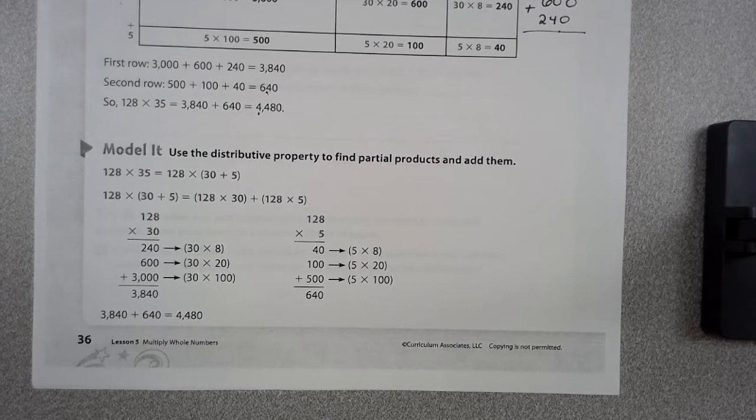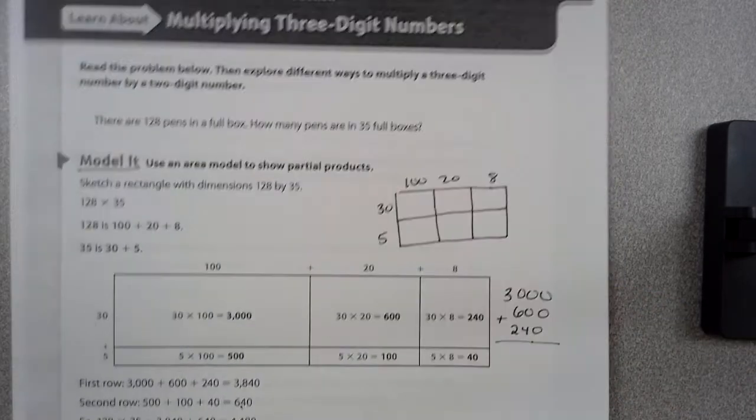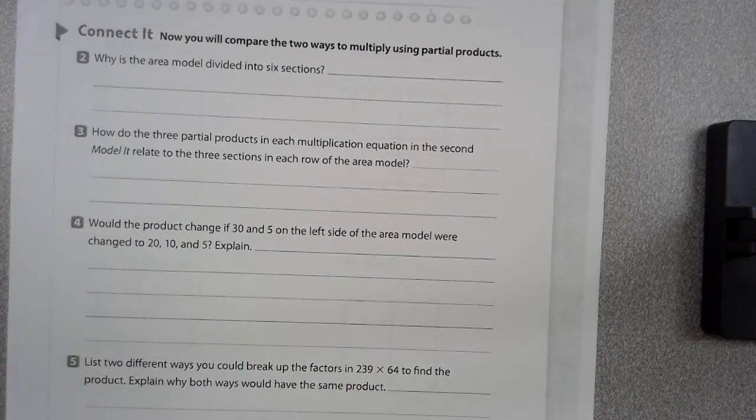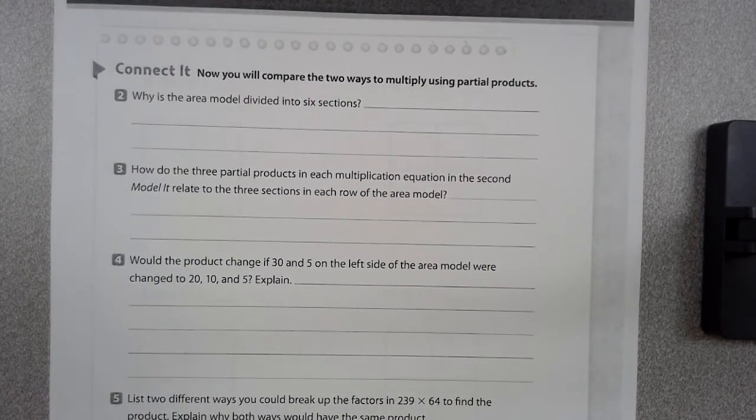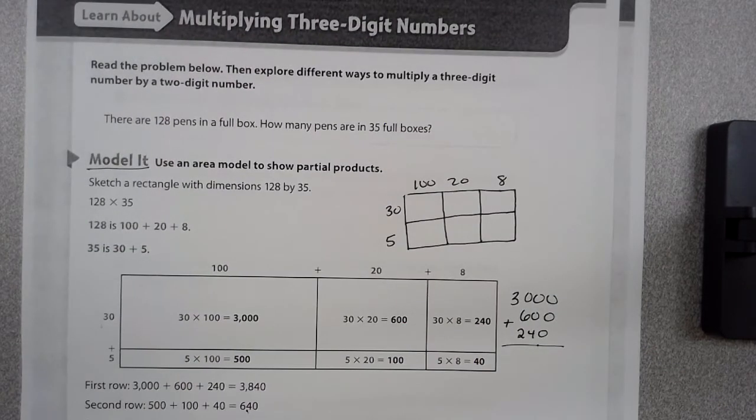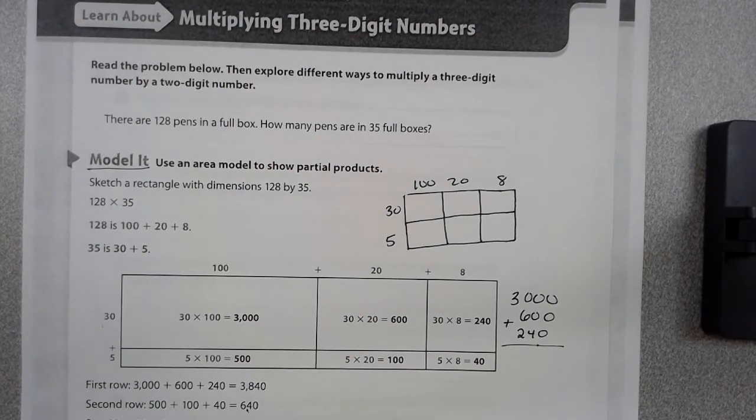Another model it would be doing the distributive property to find the partial products and then add them. I personally don't care for this model myself because it gets confusing, but this is a method.